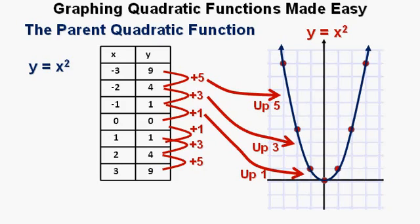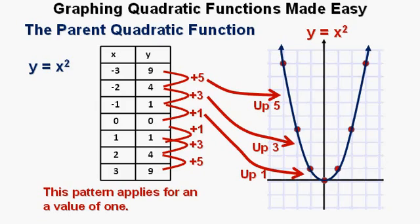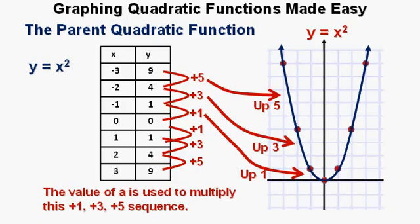Do you see the point being plotted 1 unit higher, then 3 units higher, then 5 units higher? If we went to more positive or negative numbers, the pattern would continue to 7, 9, 11, and so on. This pattern applies for an a value of 1, as in y equals 1x squared. The value of a is used to multiply this 1, 3, 5 sequence.